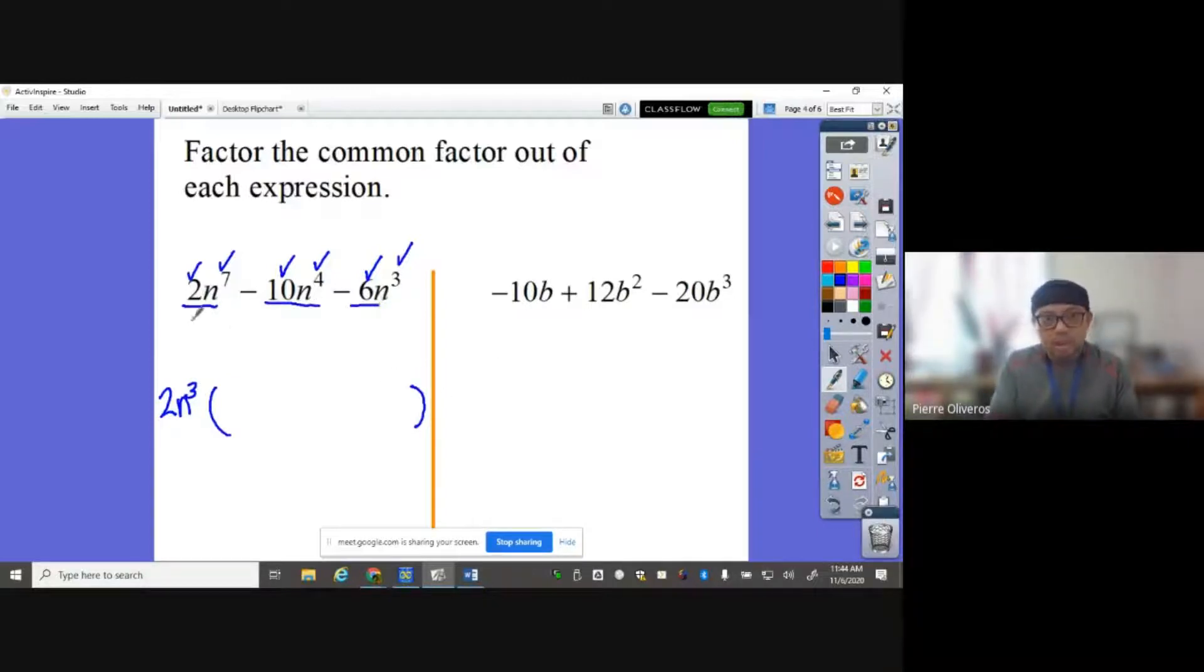Divide each term by the GCF. 2 divided by 2, cancel out. n7 divided by n3. Again, I told you, you will subtract the exponent. That will give you n to the 4th power. Negative 10 divided by 2 is negative 5. n4 divided by n to the 3rd power is n to the 1, or just leave the exponent blank there. You can make it invisible. Negative 6 divided by 2 is negative 3. And n to the 3rd, cancel out. So this is your answer.